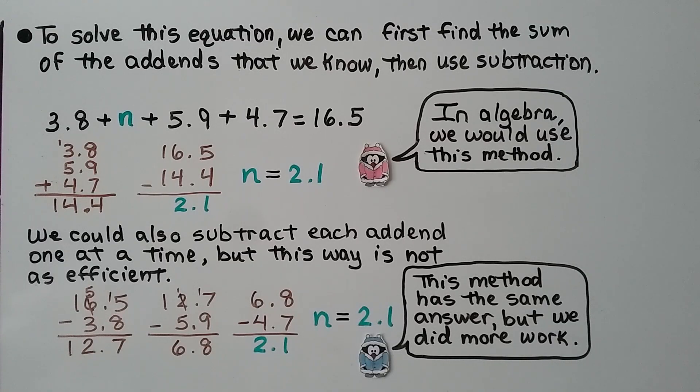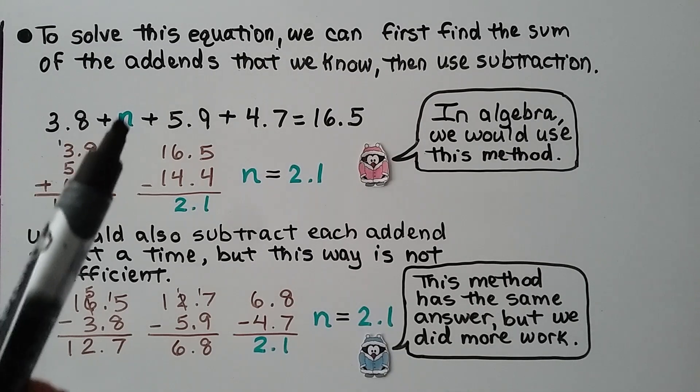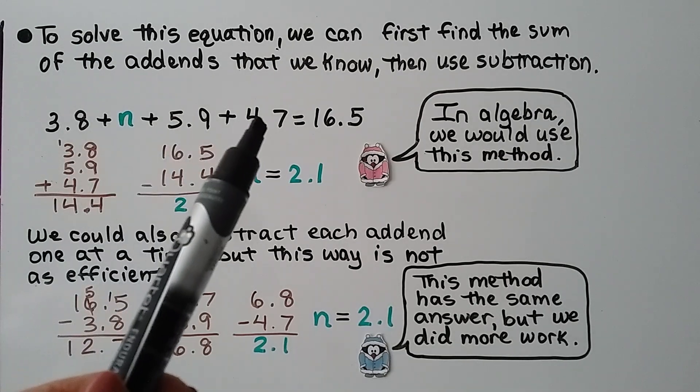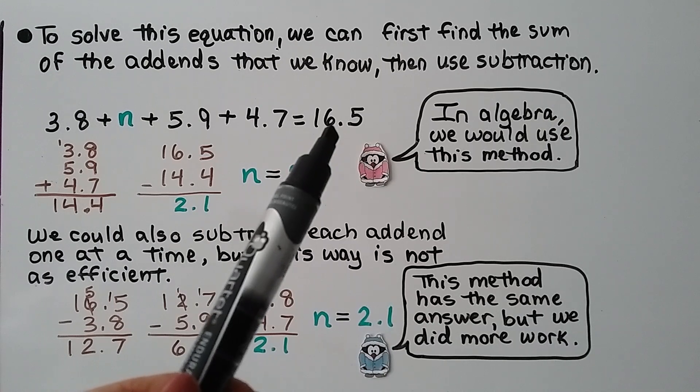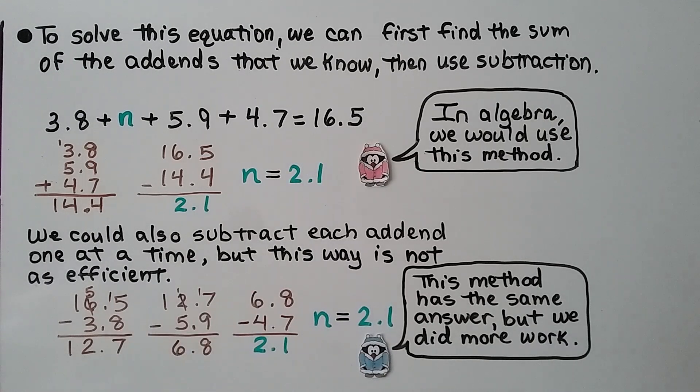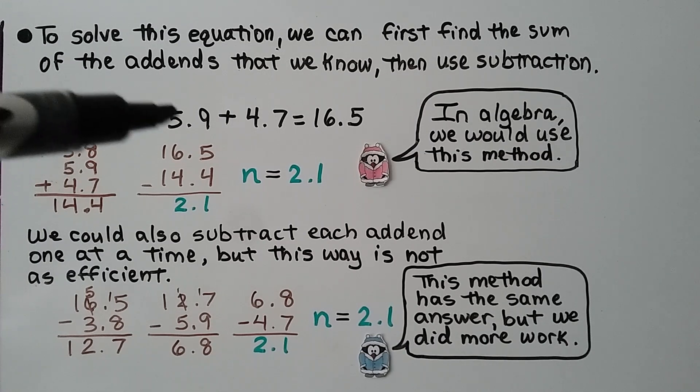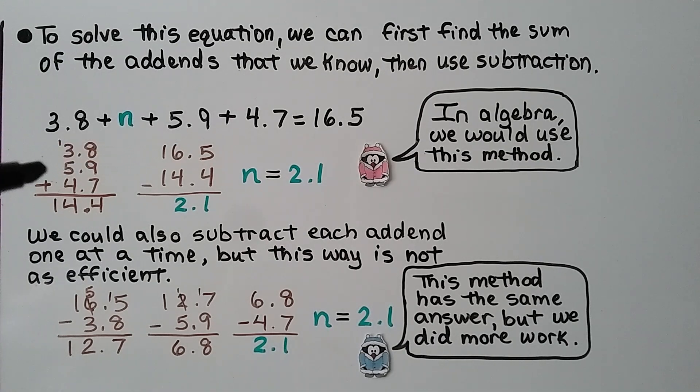To solve this equation, we can first find the sum of the addends that we know, then use subtraction. We have 1, 2, 3, 4 addends, and they will equal 16.5. What we do is, we add 3.8 plus 5.9 plus 4.7. And we get a subtotal of 14.4.